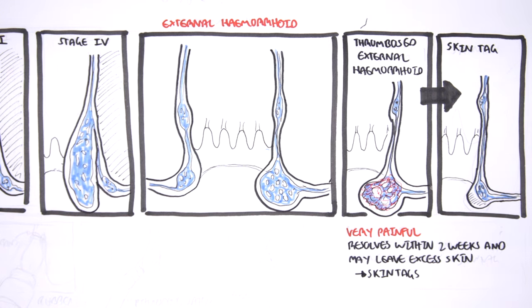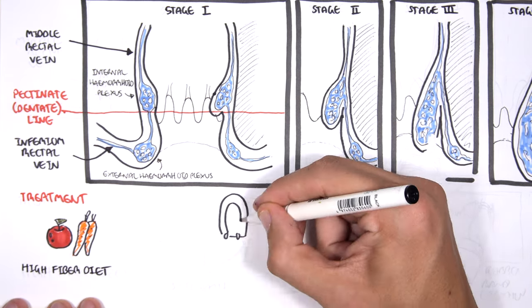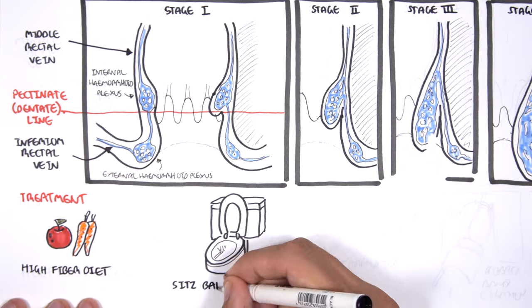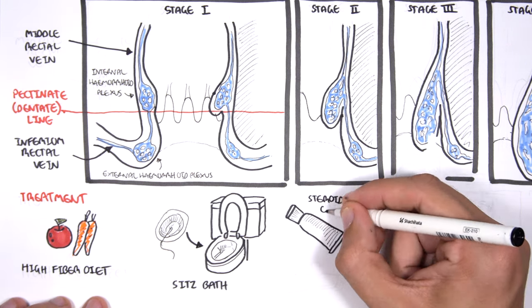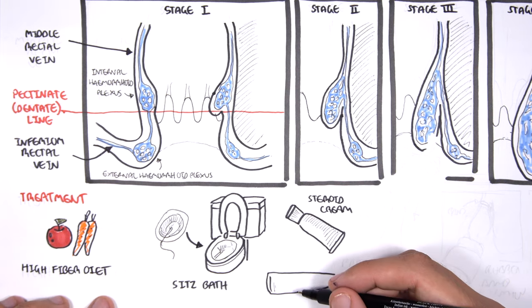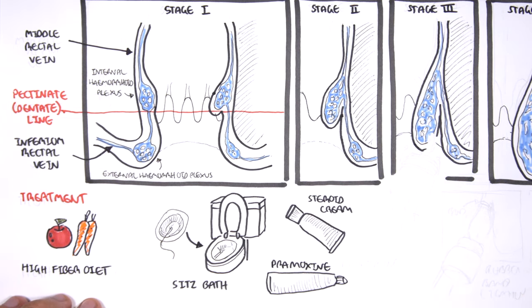Let's look at treatment now. Treatment for stage 1 and 2 internal hemorrhoids consists of high-fiber diet, a sitz bath, and a sitz bath is a warm, shallow bath that cleanses the perineum, which is the space between the rectum and the genital area. Steroid creams and pramoxine can also be used. Pramoxine is an anesthetic and an anti-pruritic agent, so anti-itching.